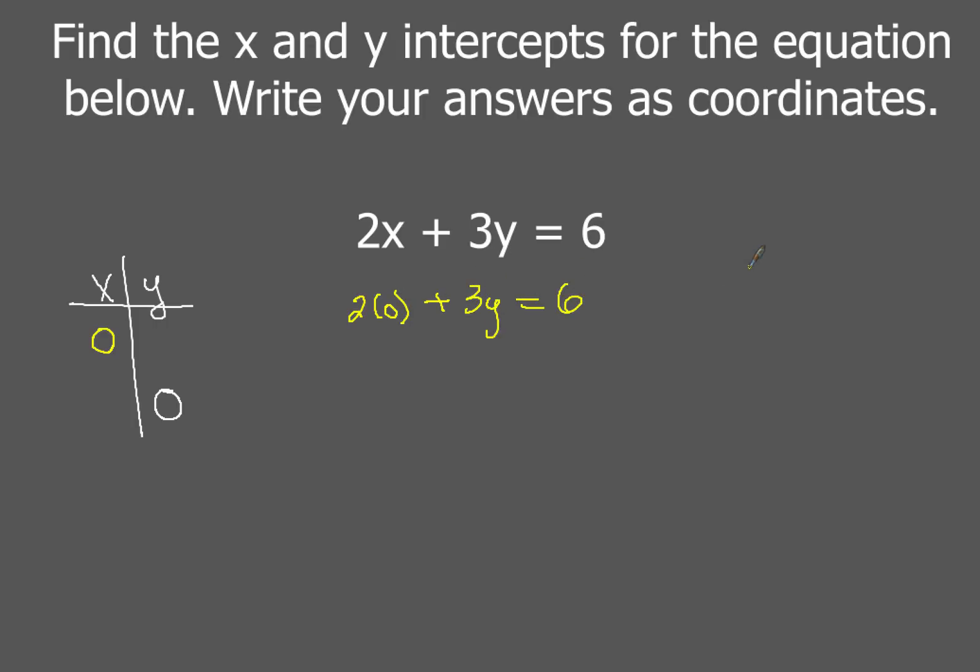And some teachers will actually even call this the cover-up method because what you're going to do is you're going to take that first term, that two x, and you're going to cover that up because two times zero is just zero so that's just going to be gone. So you're just going to have three y equals six.